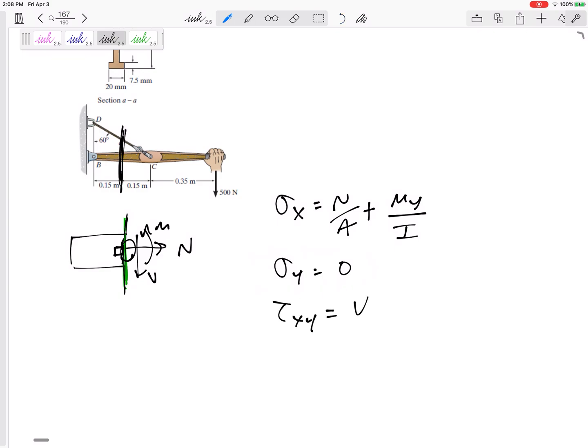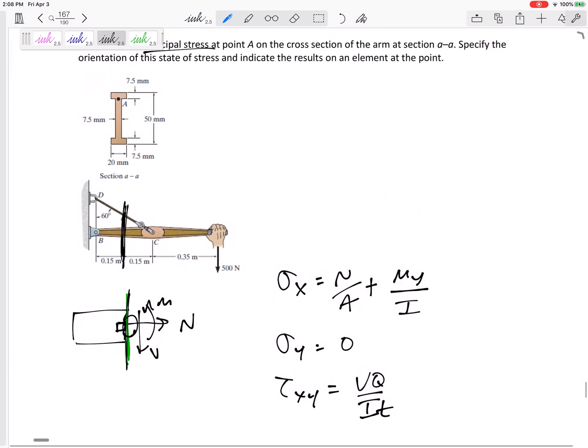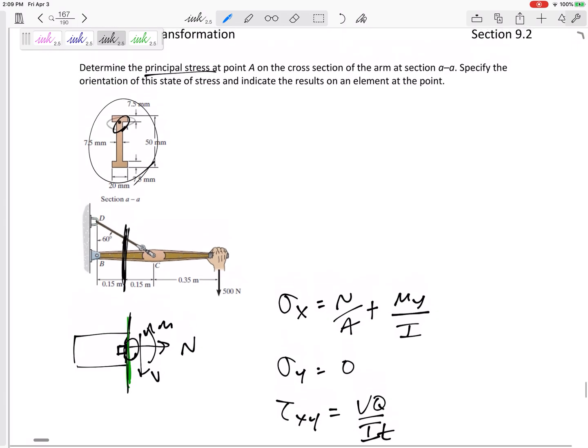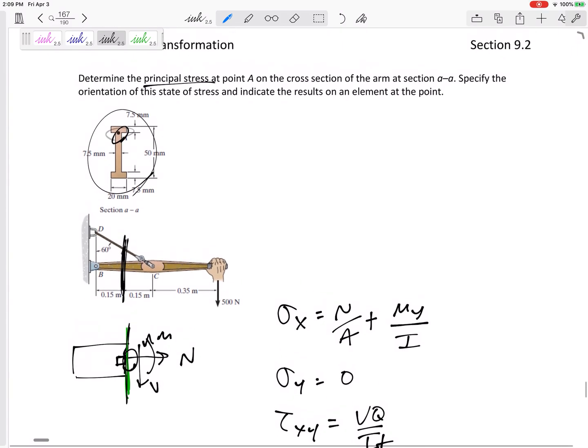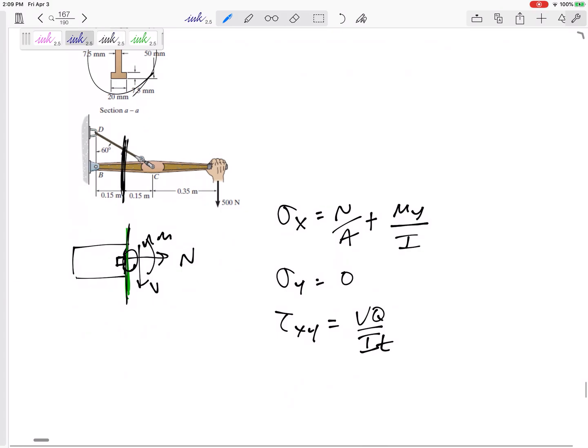My tau XY though would be the VQ over IT. That's a whole problem in itself, finding the V and then doing VQ over IT for that cross-section at that location. I'd have to specify if that's right above or right below that flange.